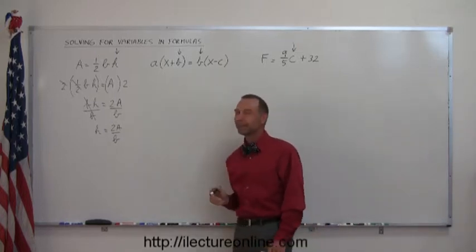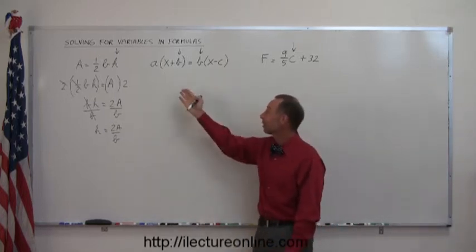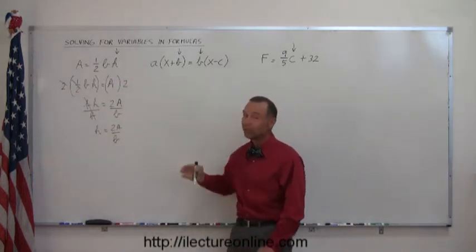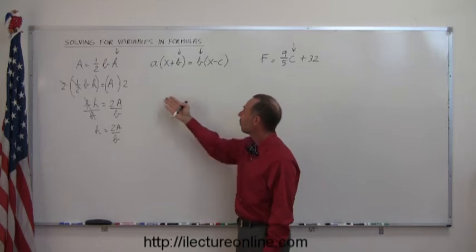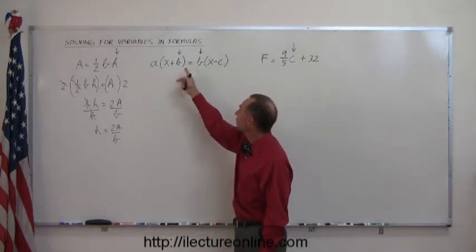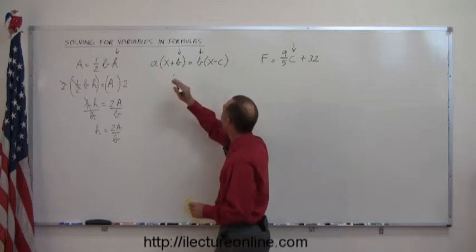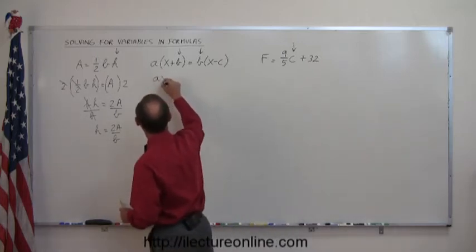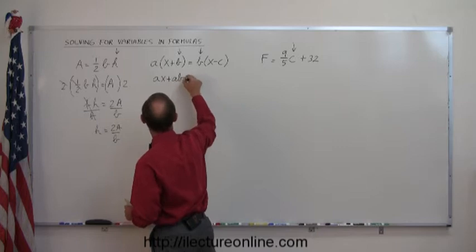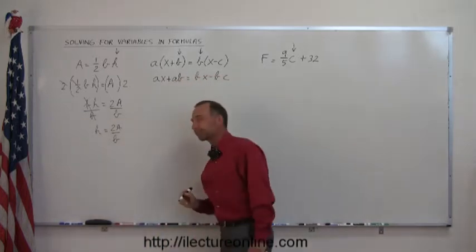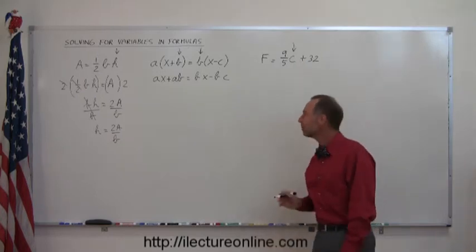Now what do you do with this one right here? Well, just like before, when you have parentheses, here you have fractions, you want to get rid of fractions, here you have parentheses, you want to get rid of parentheses, so go ahead and distribute the A and the B on the left and the right side of the equation into those quantities inside the parentheses, so you can write this as AX plus AB equals BX minus BC. So now you've gotten rid of the parentheses.